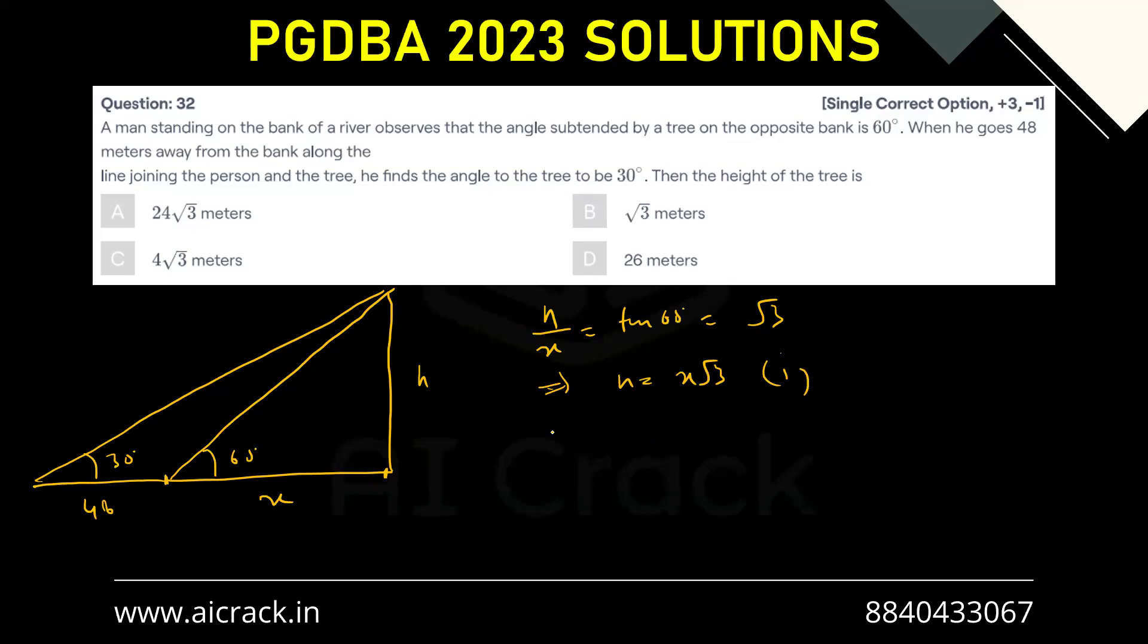Now in the bigger triangle we can say that h upon 48 plus x, that is tan 30, that is nothing but 1 by root 3. So this gives us root 3 h equals to 48 plus x.